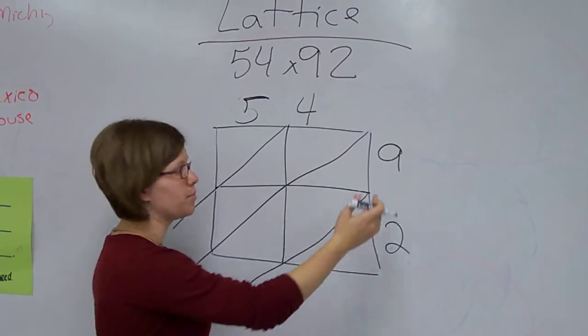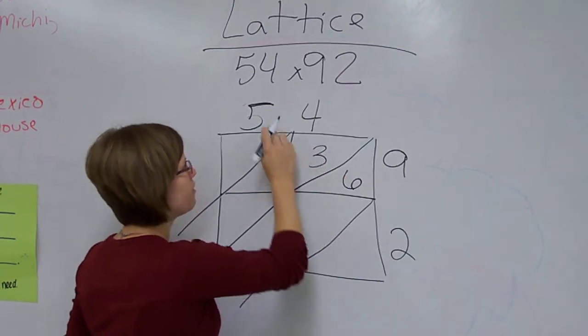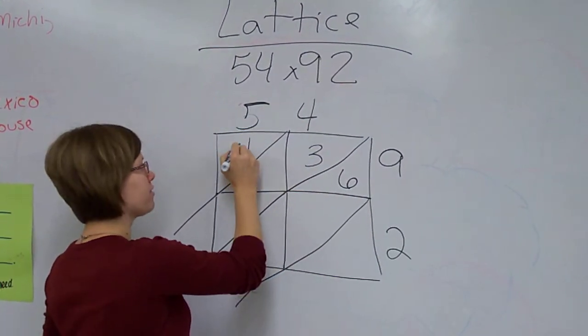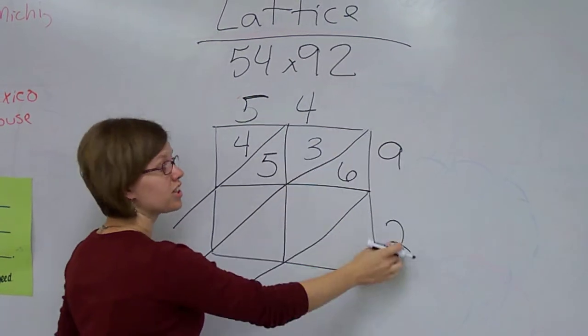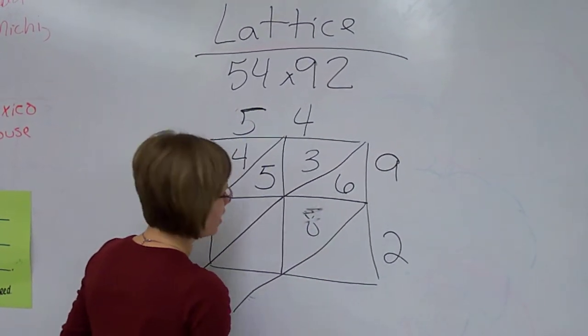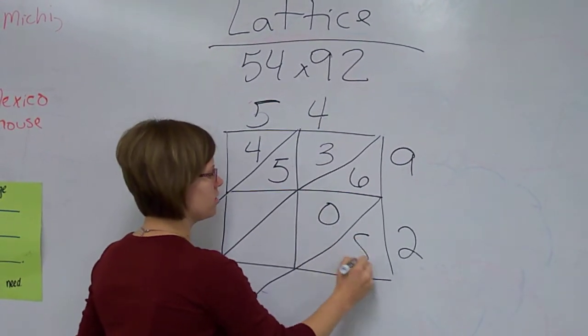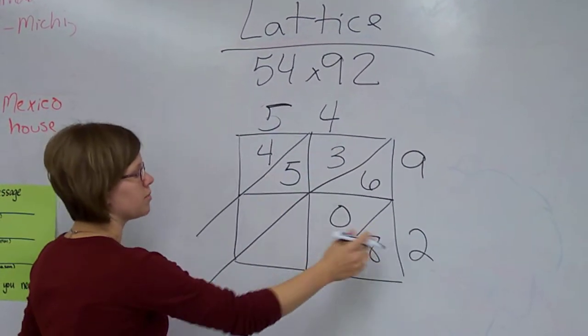Okay, now I'm ready to multiply. 9 times 4 is 36. 5 times 9 is 45. 4 times 2 is 8. Oops. And that's where it gets a little sticky. You've got to remember to put that 0 in there to hold your 10s place there. 2 times 5 is 10.